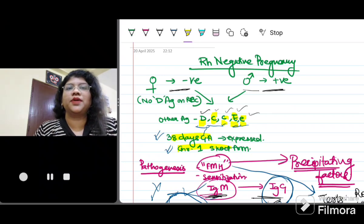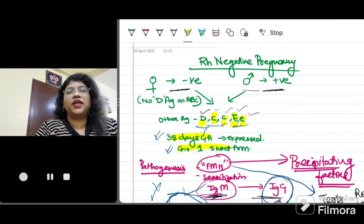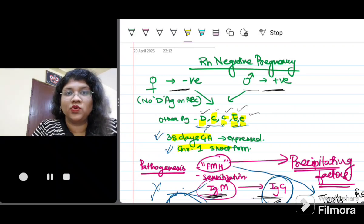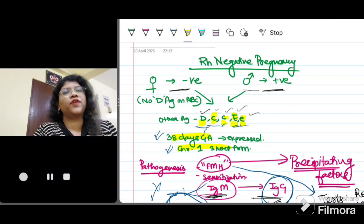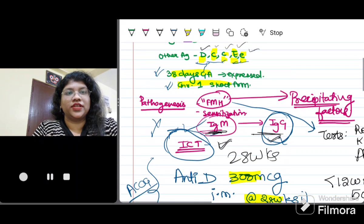So when does RH negative become a high risk pregnancy condition? When a female who is RH negative blood group conceives with a male partner who is RH positive blood group, they have a 67.5% chance of having a positive blood group fetus.